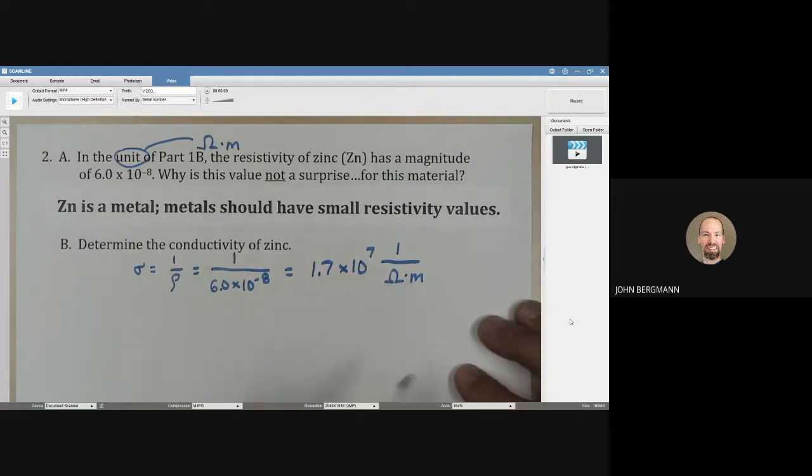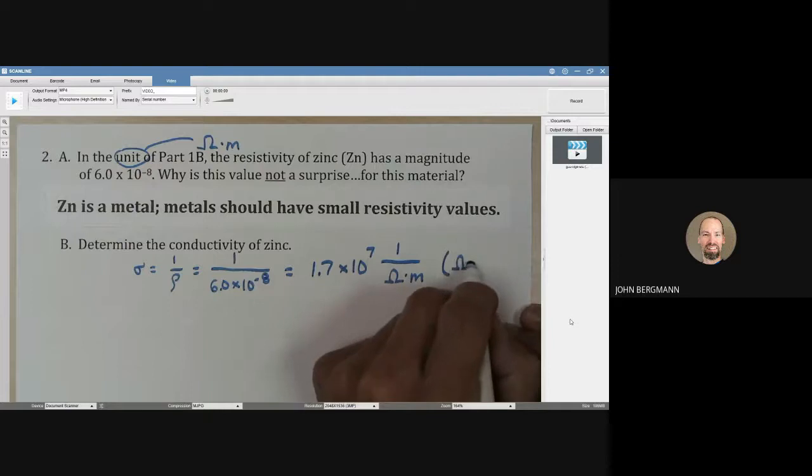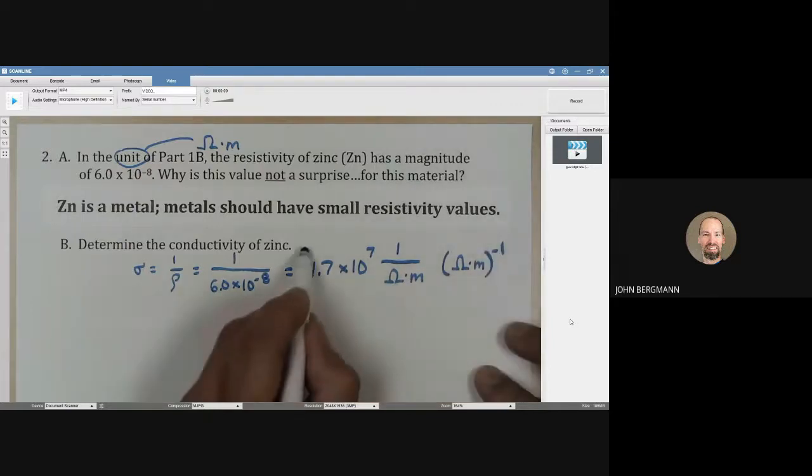Or you could say, you could write it equally well, ohmmeters with parentheses to the minus one. That would be okay too.